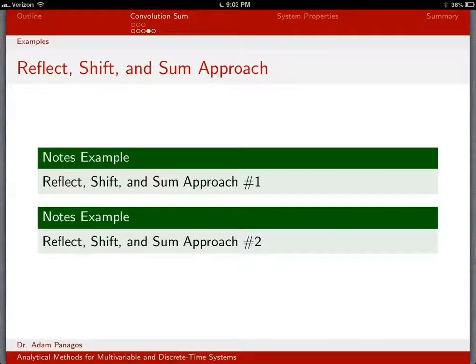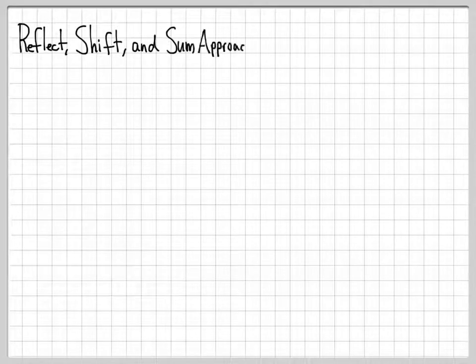In this next example, we use the reflect, shift, and sum approach number two. We're going to look at a similar example, but these signals aren't going to go on forever. We could use the approach from before where we just evaluate the discrete time convolution for each point in time, but the signals are long enough that it's probably better to use the reflect, shift, and sum approach to get equations out.